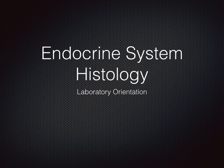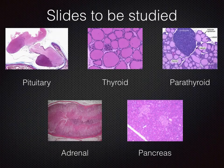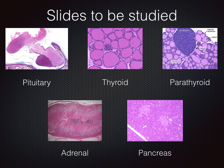This is your laboratory orientation on endocrine histology. The slides that you will be studying today include pituitary gland, thyroid, parathyroid, adrenal gland, and pancreas.